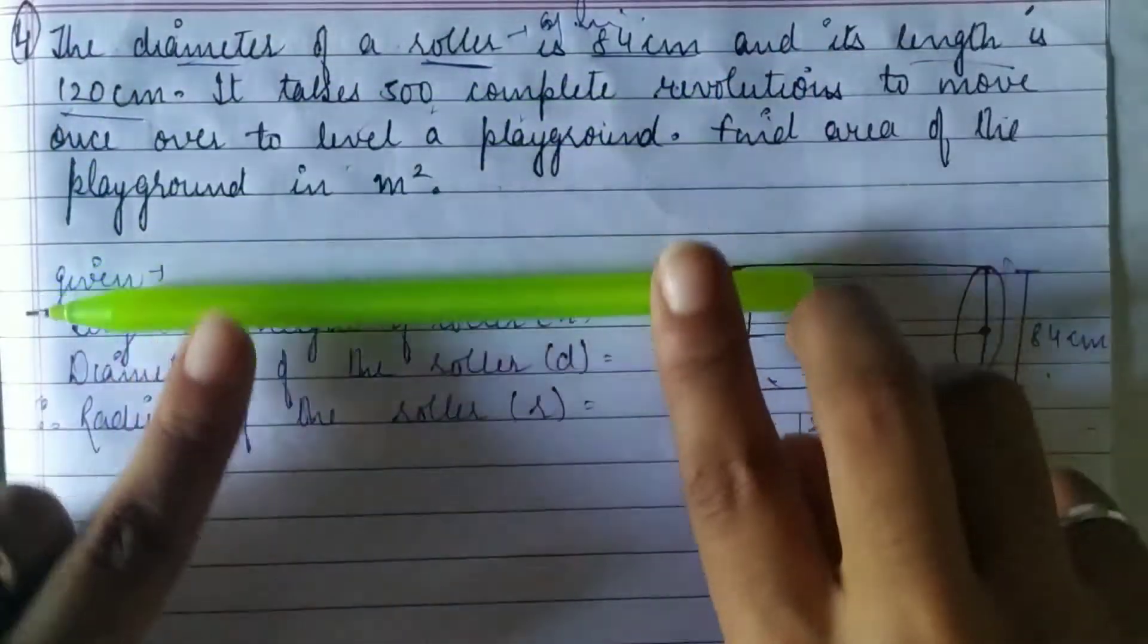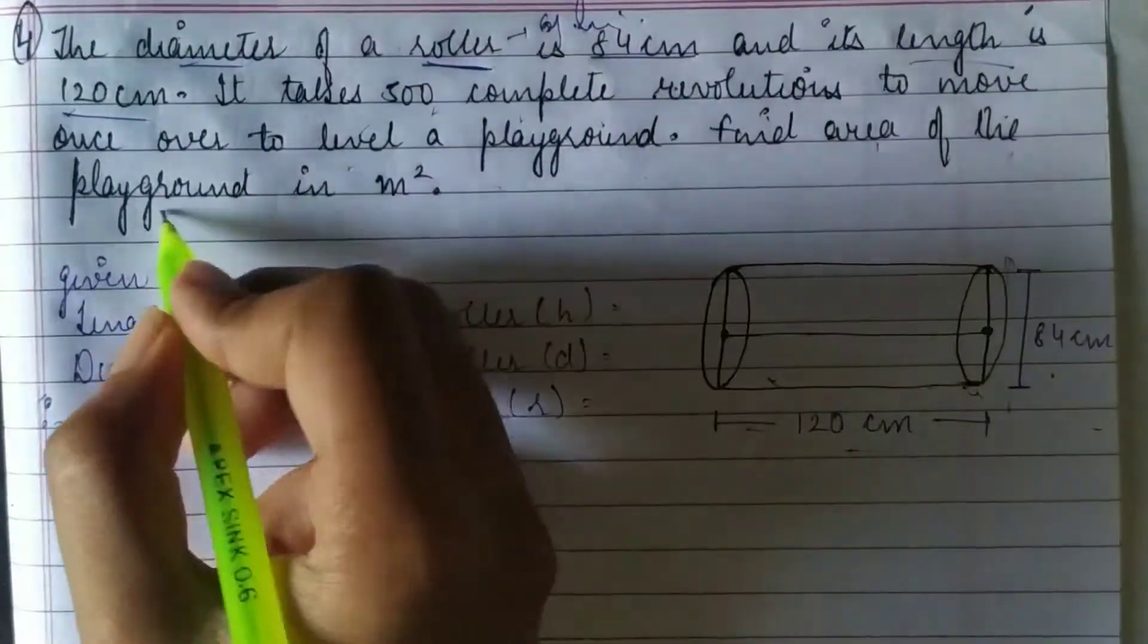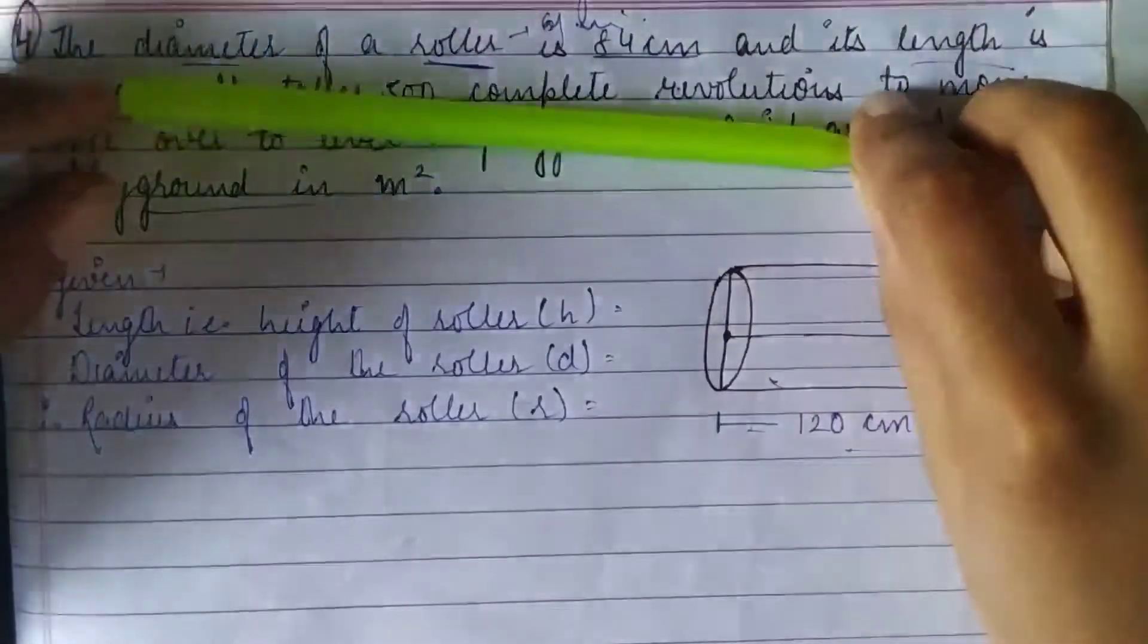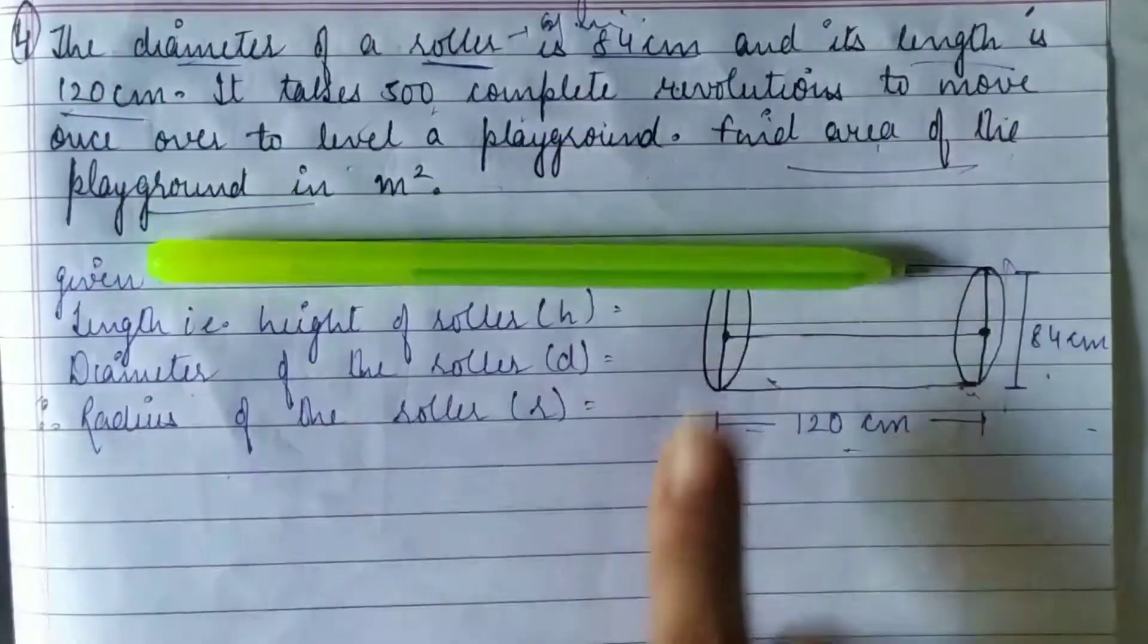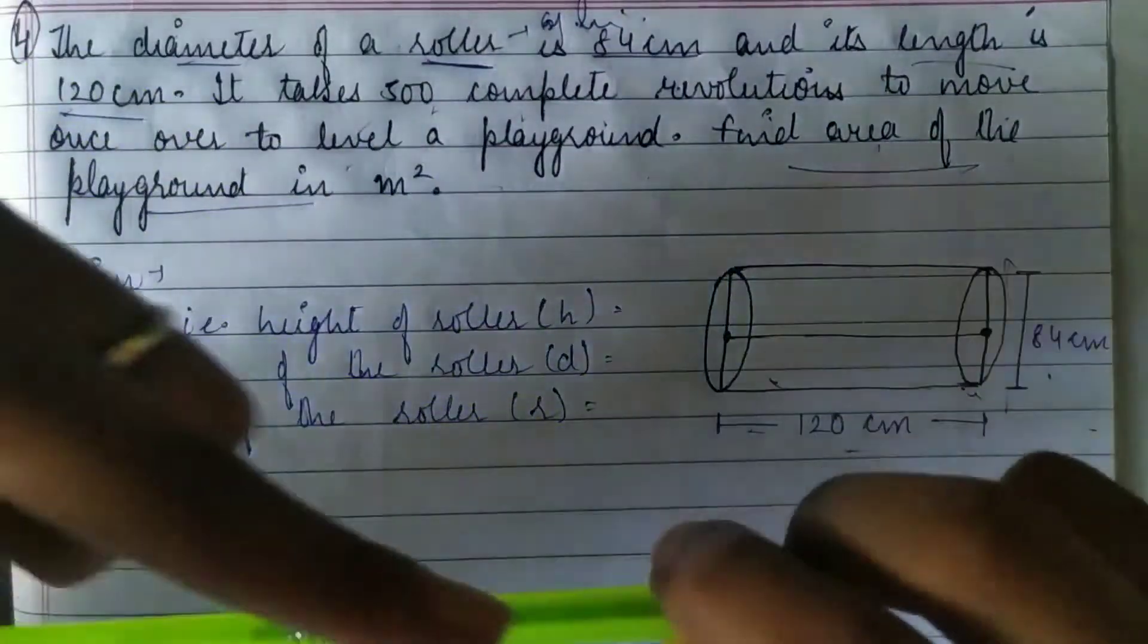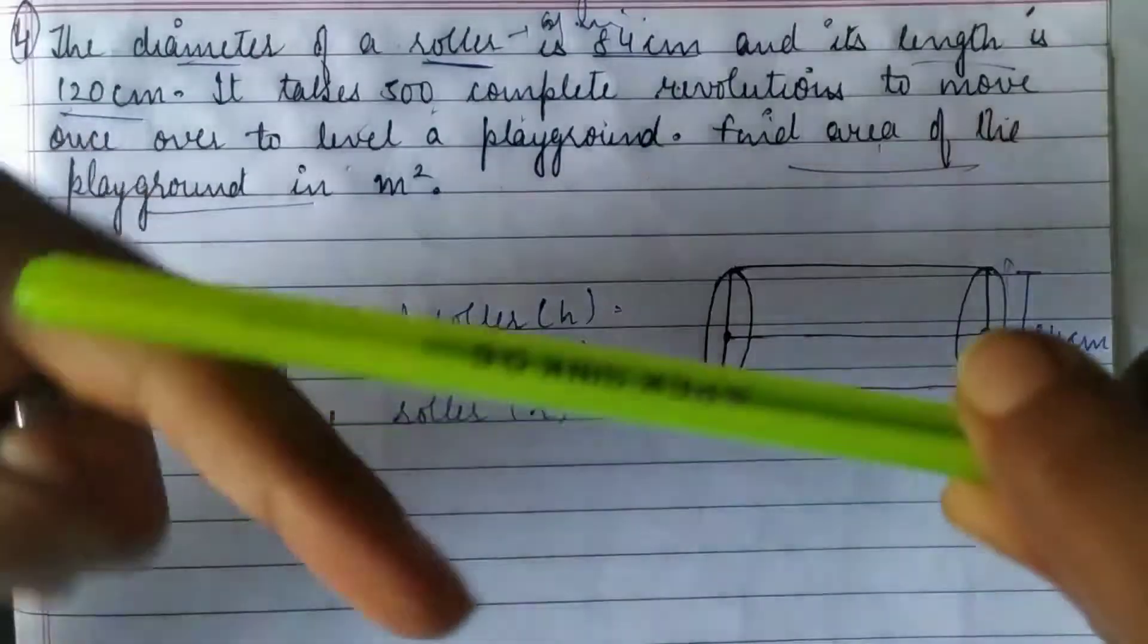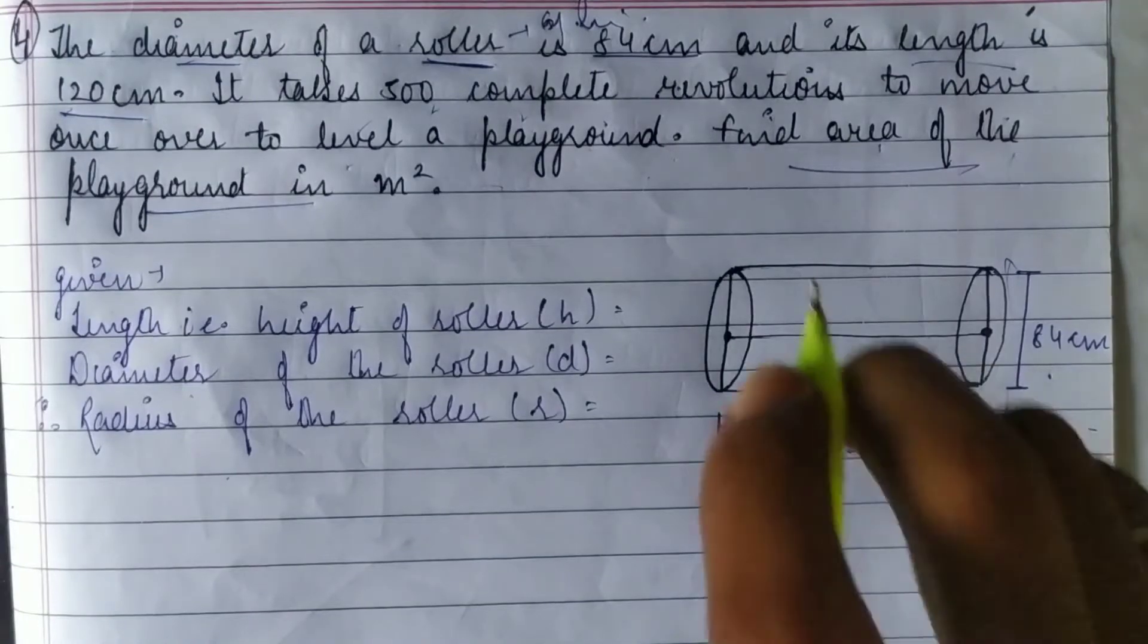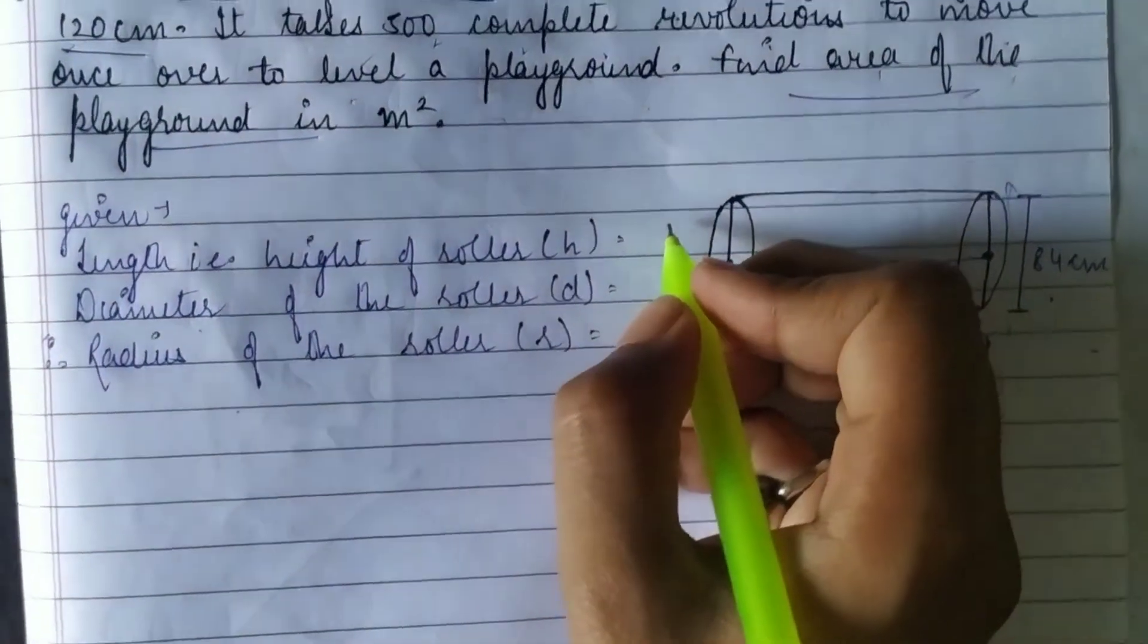We need to find the area of the playground. To find this area, we'll take the curved surface area of the roller and multiply it by 500 to get the area of the playground.